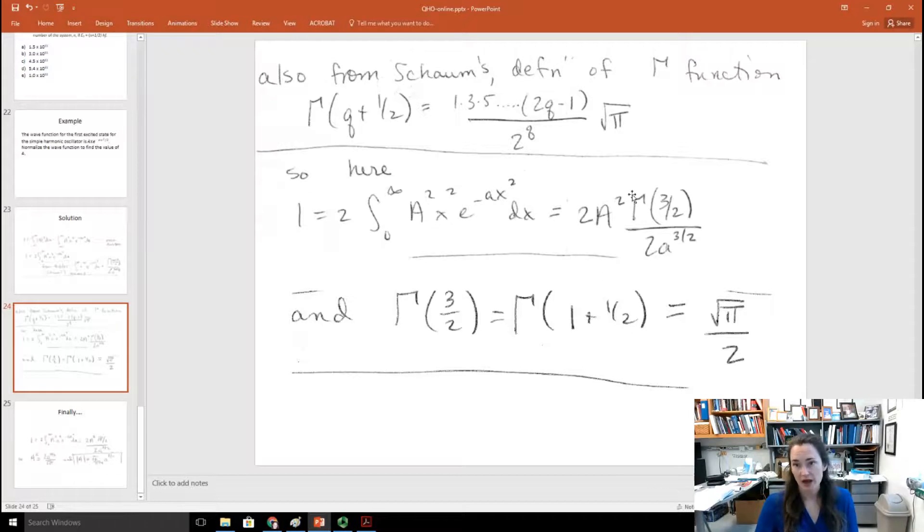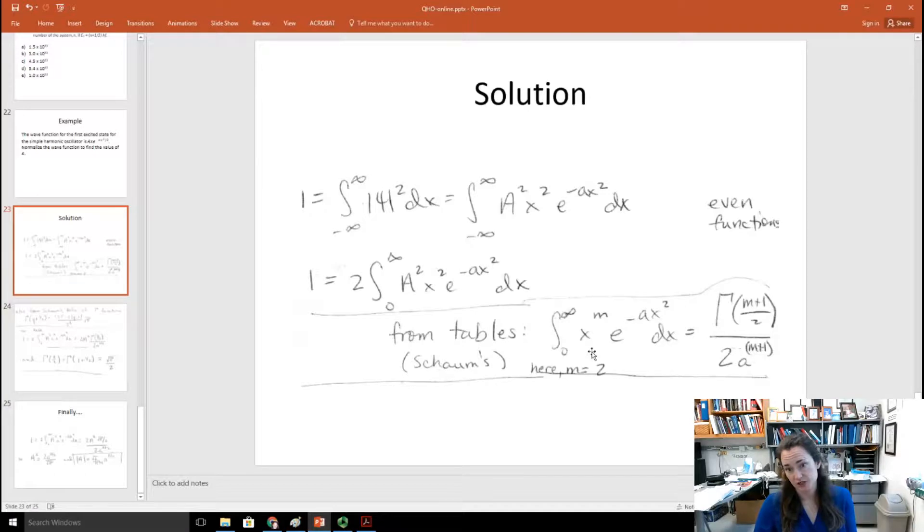So, here we have q is ascertained from the power of x. Here, m is equal to 2. If you go back to what we had over here, m is equal to 2 because we're squaring x. And so, that means that we're going to have the gamma function of 2 plus 1 divided by 2, or the gamma function of 3 halves. The gamma function of 3 halves.